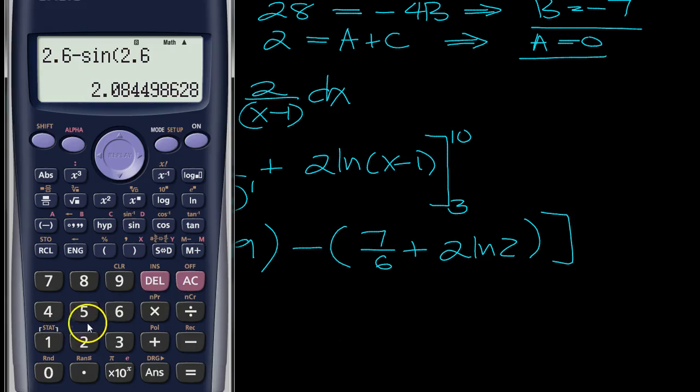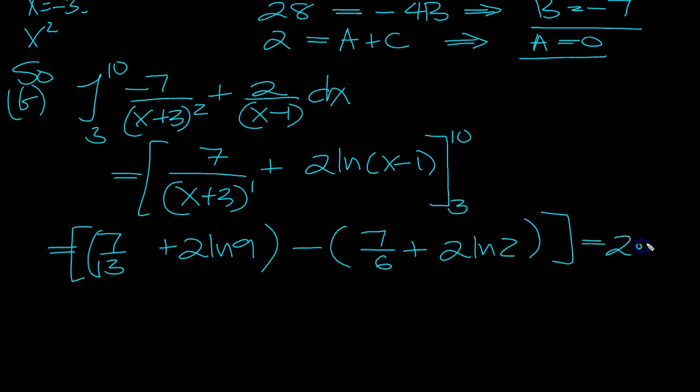Okay, so let's have a look then. We've got bracket 7 divided by 13 plus 2 log 9 minus bracket 7 divided by 6 plus 2 times natural logarithm of 2. Close the bracket, equals 2.379, so it's 2.38 to 2 decimal places. Thank you.